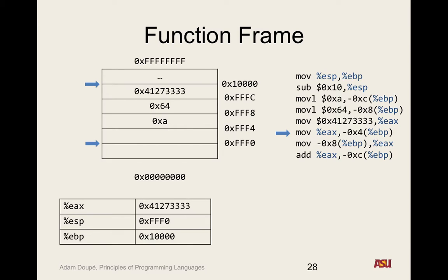Now we move this floating point value into EAX — we now know the value in that register and overwrite whatever was there. Then we move whatever's in EAX into EBP minus 4, which is FFFC — that's variable C. And what type is C? Float. That makes sense: we have integer 10, integer 100, and the float value at local variables A, B, and C. That long hex number is the floating point representation of 10.45.